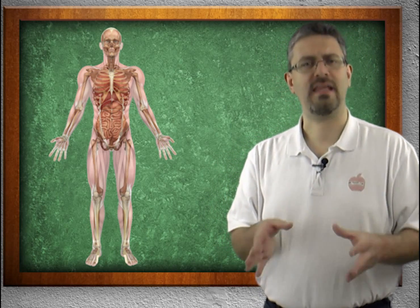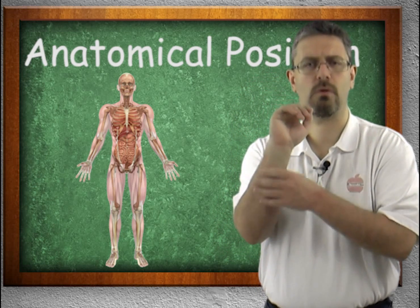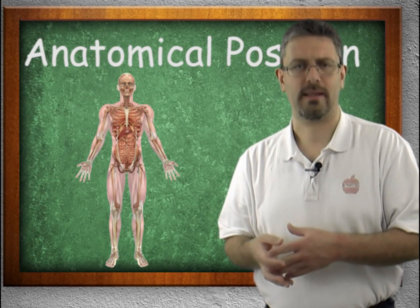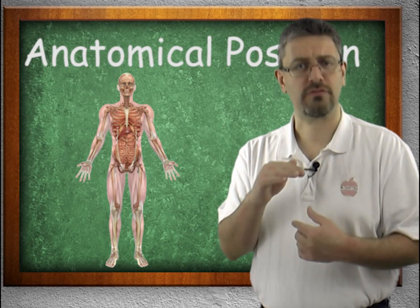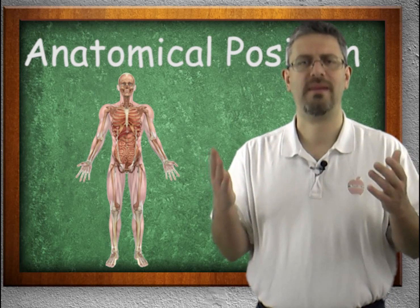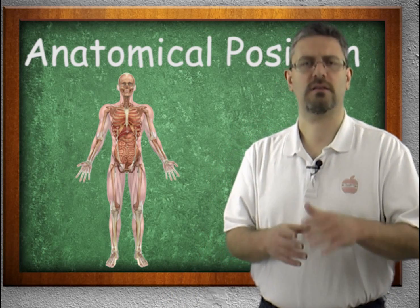Unless you're told otherwise, any human body that you're studying, you assume is in that position. This becomes very important as you progress in your studies of anatomy and physiology. For example, the ulna and the radius are two bones found in the forearm. One of them is closer to the body, one of them is further away from the body. But if you turn your forearm around, they reverse. That's why we have anatomical position — we have a common ground that we say the human body is in, unless told otherwise.